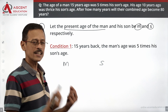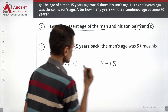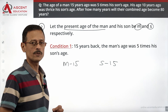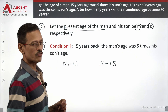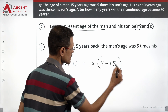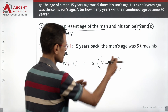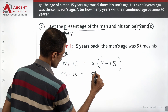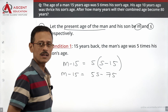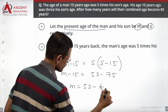The man's present age is m, so 15 years back it would have been m minus 15. The son's age 15 years back would have been s minus 15. These are their ages 15 years back. The man's age 15 years back was 5 times the son's age 15 years back. So: m minus 15 equals 5 times (s minus 15). Expanding the right hand side: m minus 15 equals 5s minus 75. Moving minus 15 to the right: m equals 5s minus 75 plus 15, which equals 5s minus 60.